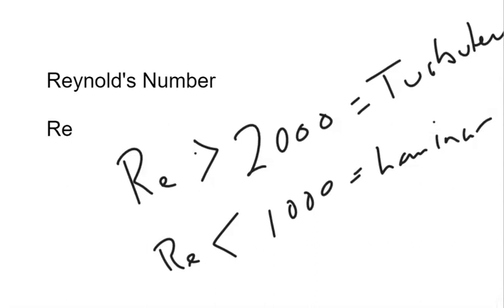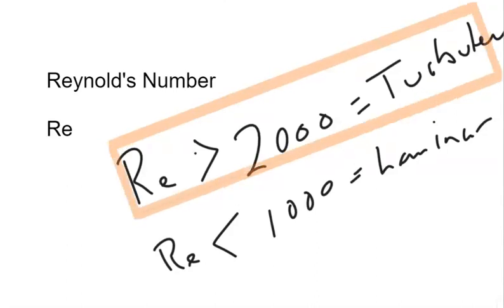In between 1,000 and 2,000 for our purposes in the circulatory system, we don't know if it's laminar or turbulent. The fact is it will probably be closer to laminar, but we don't need to worry about that. The main thing to remember about Reynolds number is that over 2,000, it's turbulent. And that you do need to know.